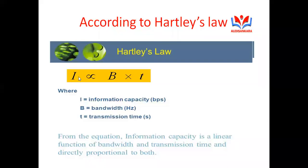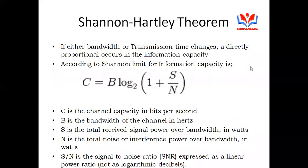In Hartley's Law, I represents information capacity measured in bits per second; B is bandwidth measured in hertz; and T is transmission time measured in seconds. From this equation, the information capacity is a linear function of both bandwidth and transmission time, and it is directly proportional to both. This is Hartley's Law for information capacity.